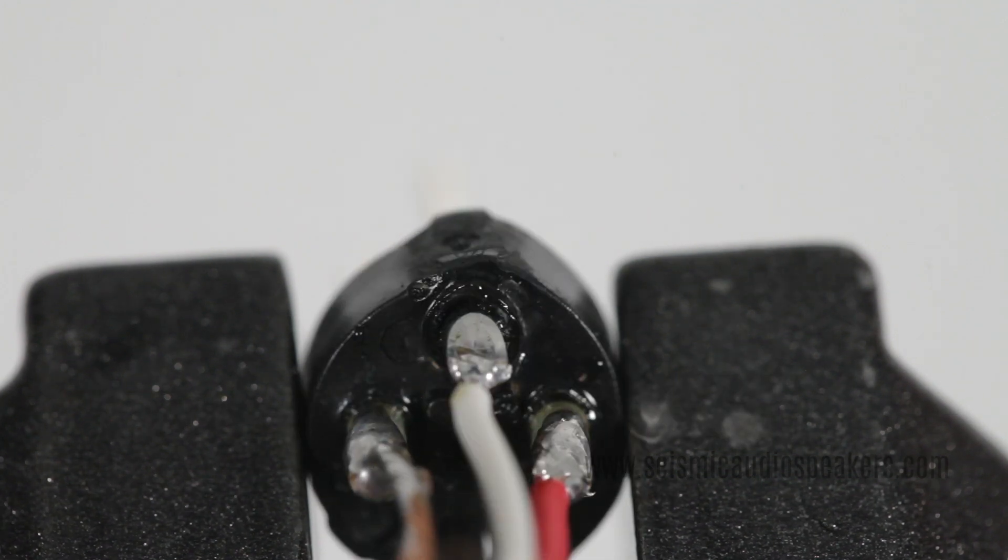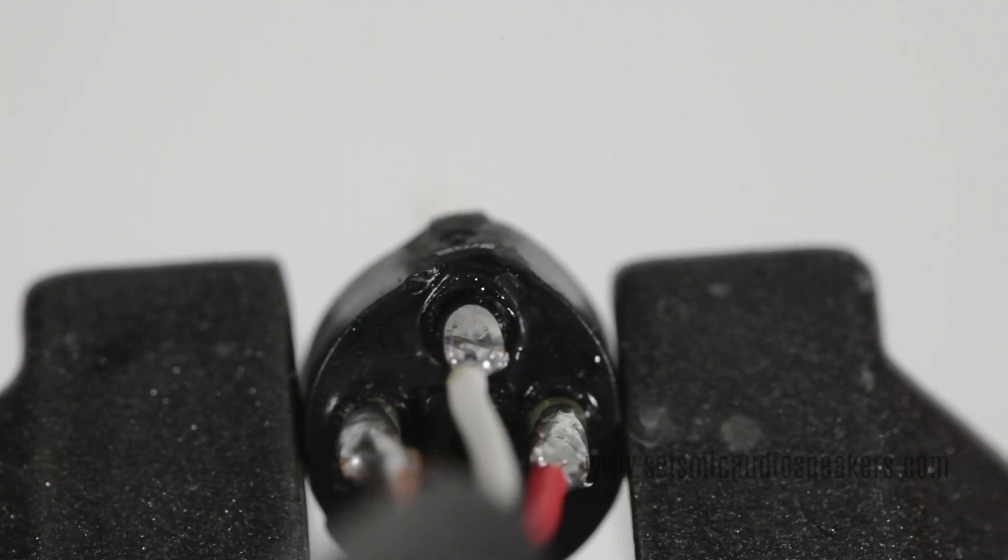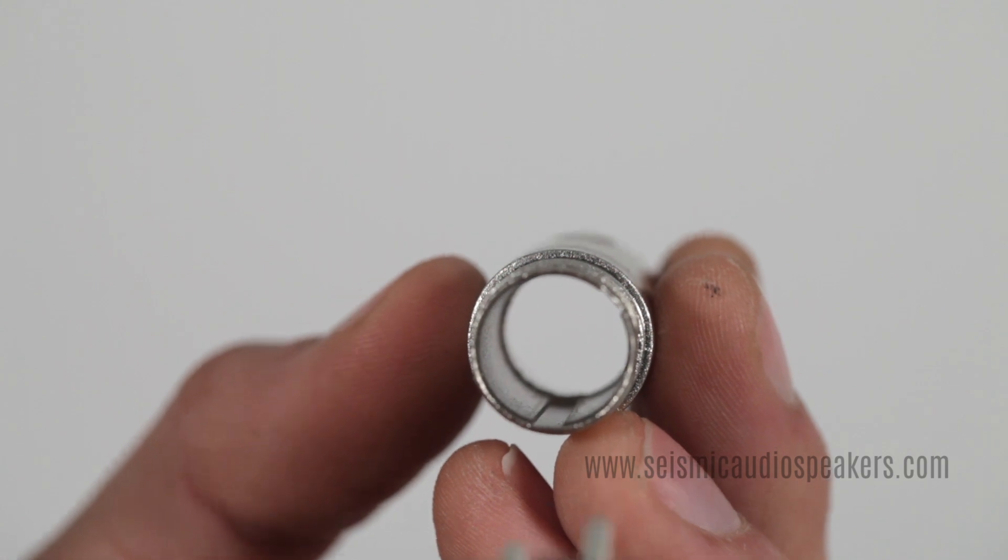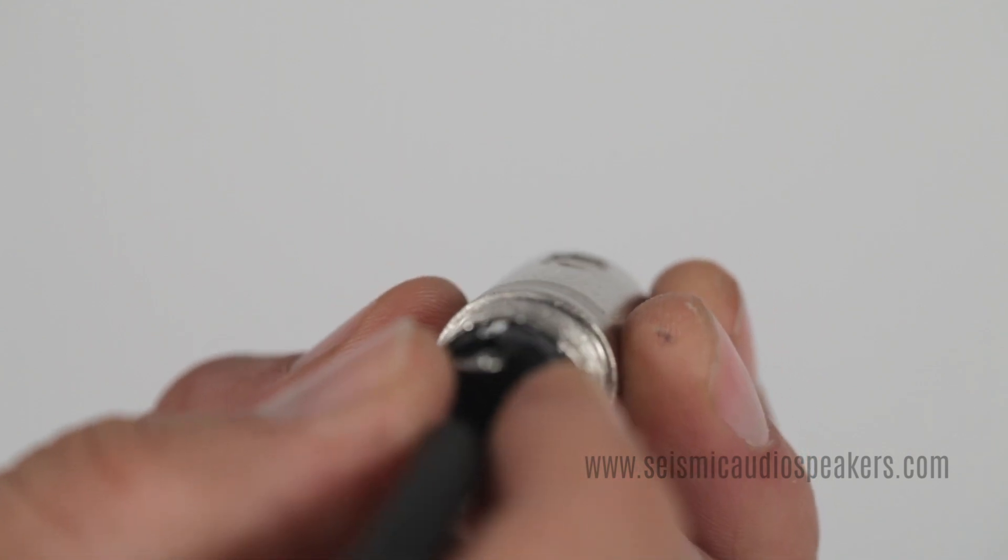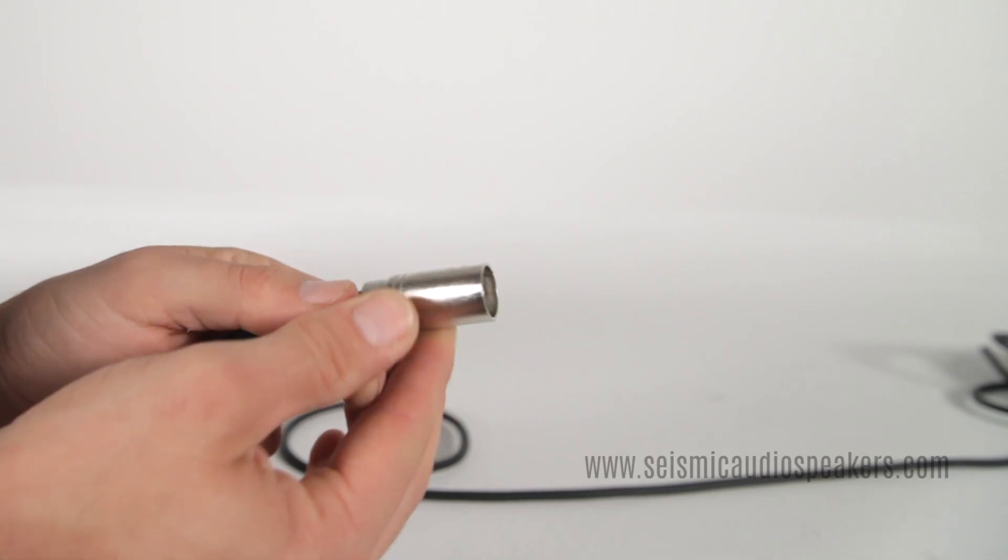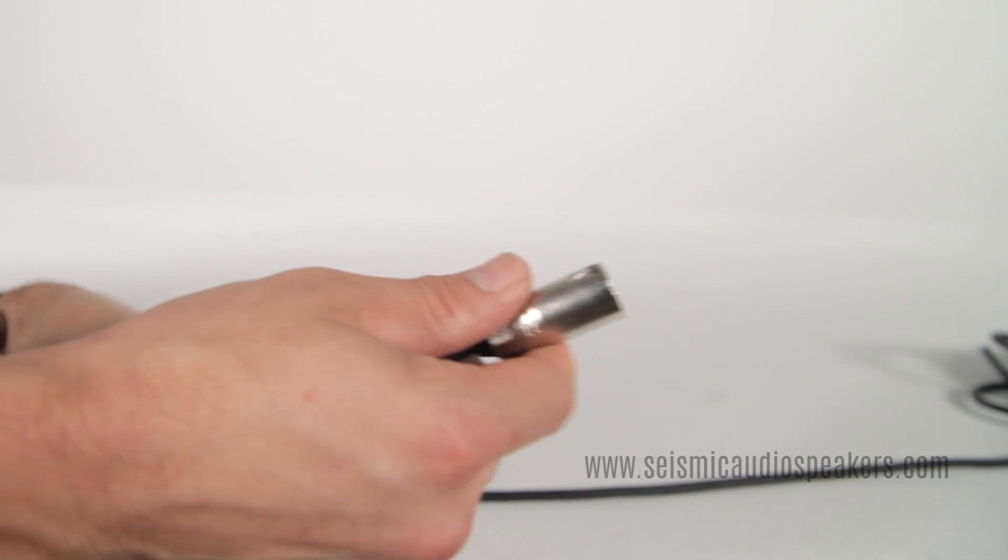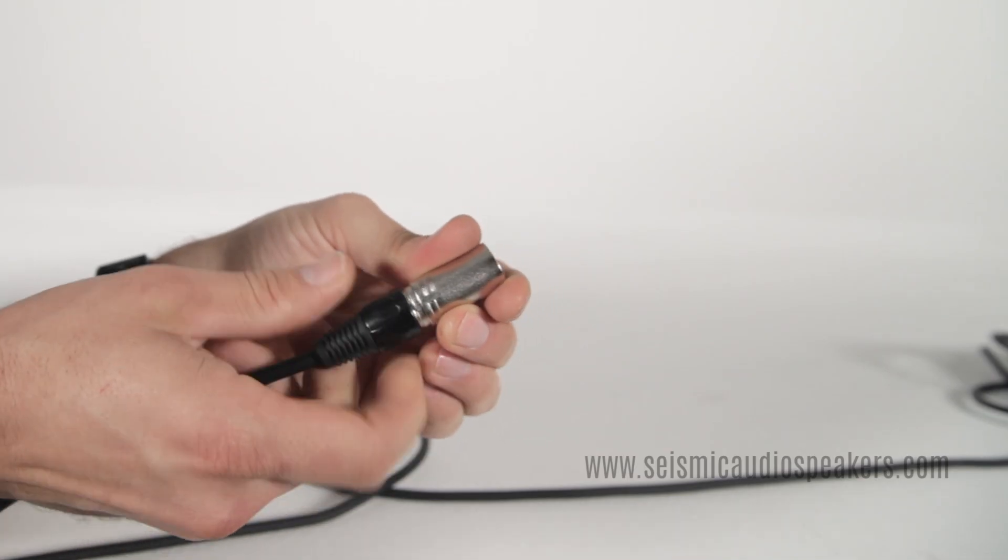Tug on the wire to check that your solder joints are secure. Insert the connector in the sleeve by aligning the notches to the slots. Insert the strain relief. Then screw on the outer cover.